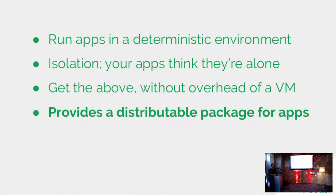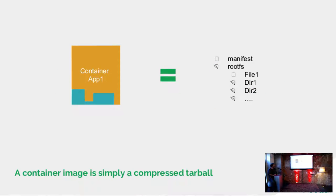What containers actually provide are these images - a distributable package basically for apps. We're actually going to look at building an image and how it's constructed. We're actually going to build an ACI, which is very similar to building a Dockerfile but slightly different. A containerized application is basically a compressed tarball. It includes a manifest and then you have a root filesystem. In the example we're going to be showing, there are actually only two files: the manifest itself, describing the image, and the root filesystem which will only have a static binary - a simple web server written in Go.